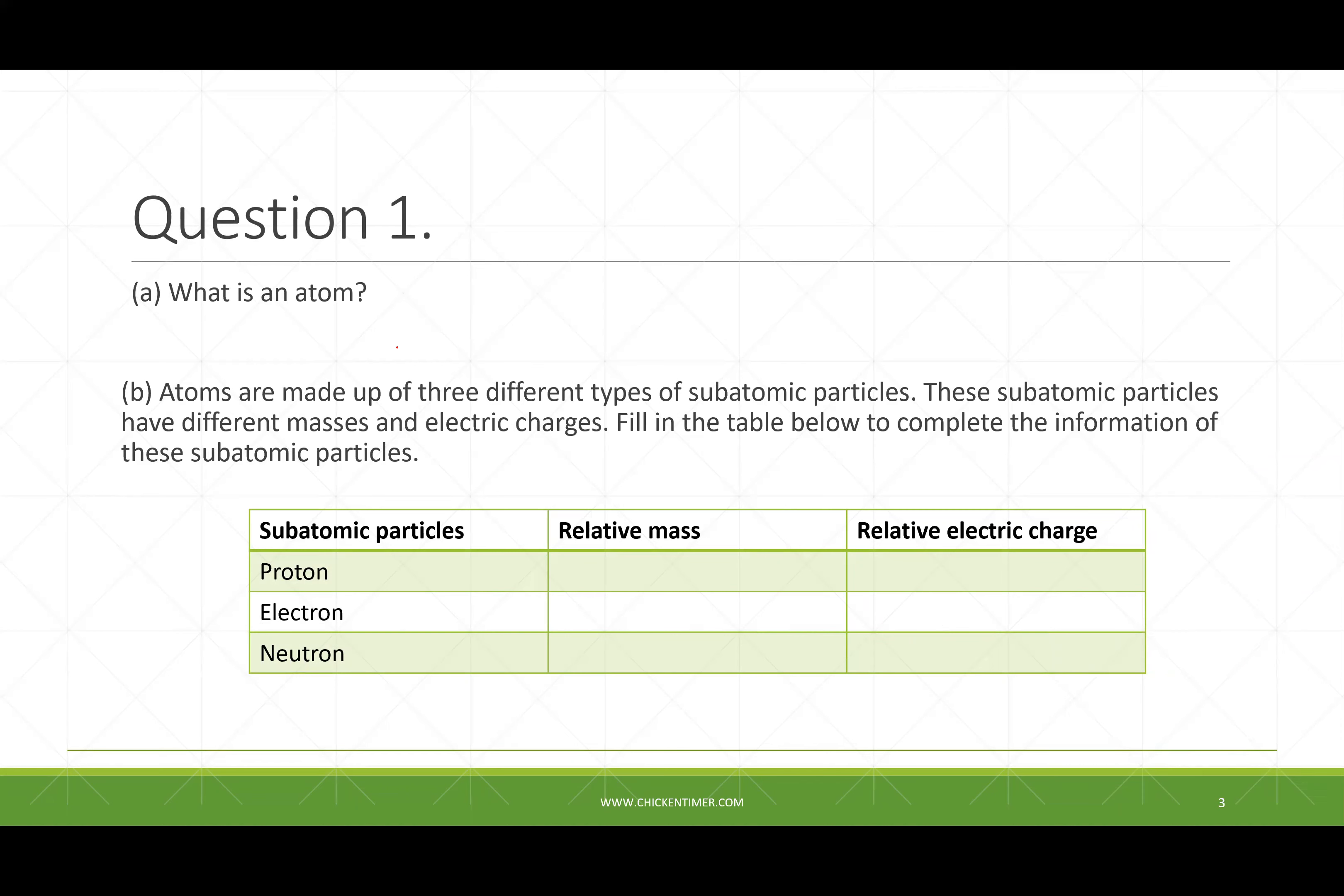Okay, so the second table. So atoms are made out of - which one? Proton, yeah. For both it's one. For the relative electric charge, it's plus one - positive.